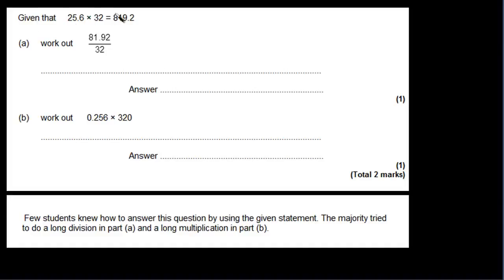So that's this statement up here. Most students, the majority of students, tried to do a long division in Part A and a long multiplication in Part B. In other words, they just skipped this information up here. They looked at this and thought, okay, I can divide 81.92 by 32, I'll use the long division method that I was taught, the standard algorithm using the bus stop idea.